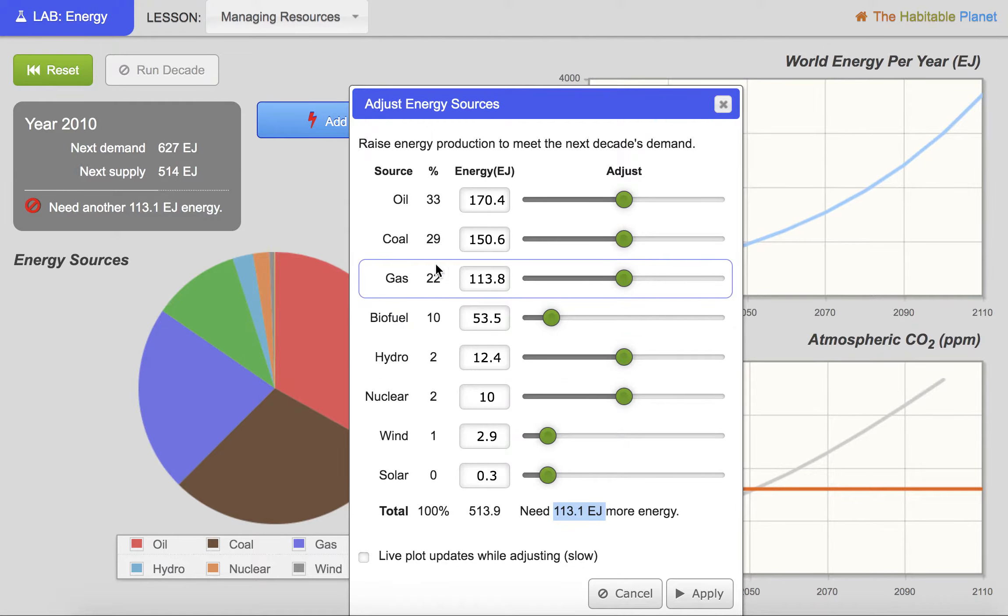Now be aware, some of these sources are going to create more CO2 than others. So I might want to increase the amount of wind or increase the amount of solar energy. But if I do that, I can't quite get to this total energy need. So I'm going to need to do some more adjusting here. And the thing about this is you don't want to actually make it so that there's more energy created than used.